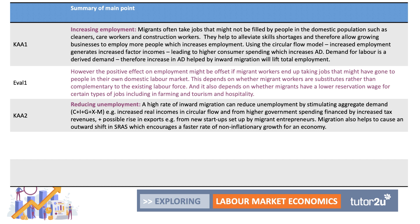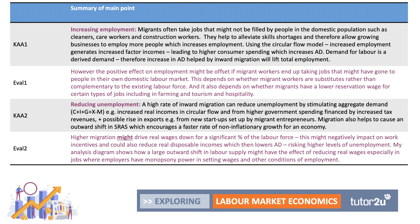However, higher migration might drive real wages down for a percentage of the labor force. If there's an influx of workers, the real wage may fall, which could negatively affect work incentives and reduce real disposable incomes for some people, thereby lowering demand and risking higher levels of unemployment. The analysis diagram shows how a large shift in labor supply might reduce wages, especially in occupations where employers have monopsony power in setting wages.